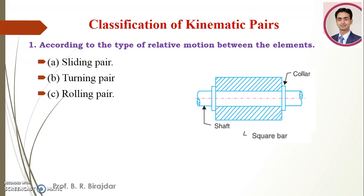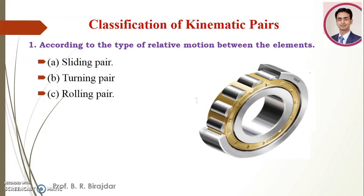Third: the rolling pair. When the two elements of a pair are connected in such a way that one rolls over another fixed link, the pair is known as the rolling pair. An example is the ball and roller bearing. The ball revolves about its own center and also rotates about the inner race or outer race — that is the rolling pair.